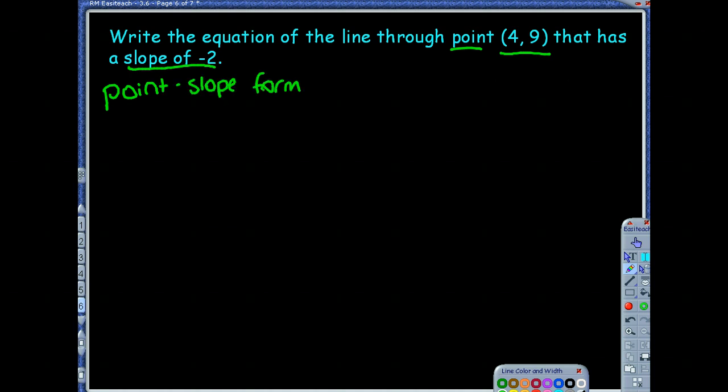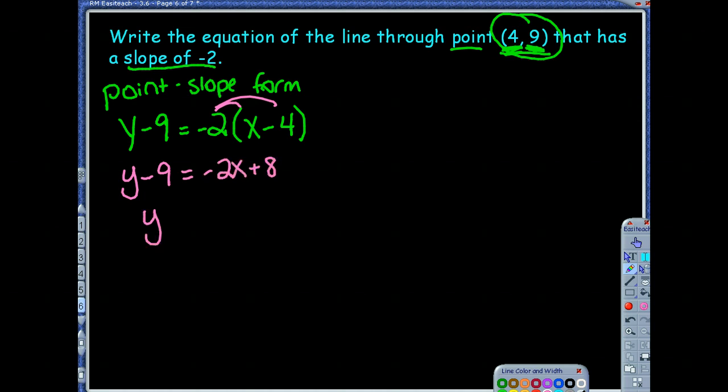Point-slope is saying y minus y1, so it would be y minus the y-coordinate of your point, which is 9. I'm going to say equals, your m is your slope, so -2, and then the quantity x minus x1, so that's your x-coordinate, which is 4. It's y minus the y-value of your point equals the slope times the quantity of x minus the x-value of your point. That's essentially an equation, but you do need to rewrite it. Let's distribute first, and you get y - 9 = -2x + 8, and then add 9 to both sides, and I get y = -2x + 17, and there's your equation in slope-intercept form, which is your final answer.